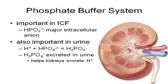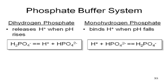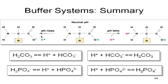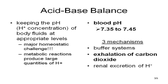The phosphate buffer system is important in the intracellular fluid and in urine, but it works the same way. If your pH goes up, you need more hydrogens, so it releases them. If your pH goes down, you suck the hydrogens up. It doesn't matter whether it's the protein buffer system, the carbonic acid-bicarbonate buffer system, or the phosphate buffer system — they all do the same thing.